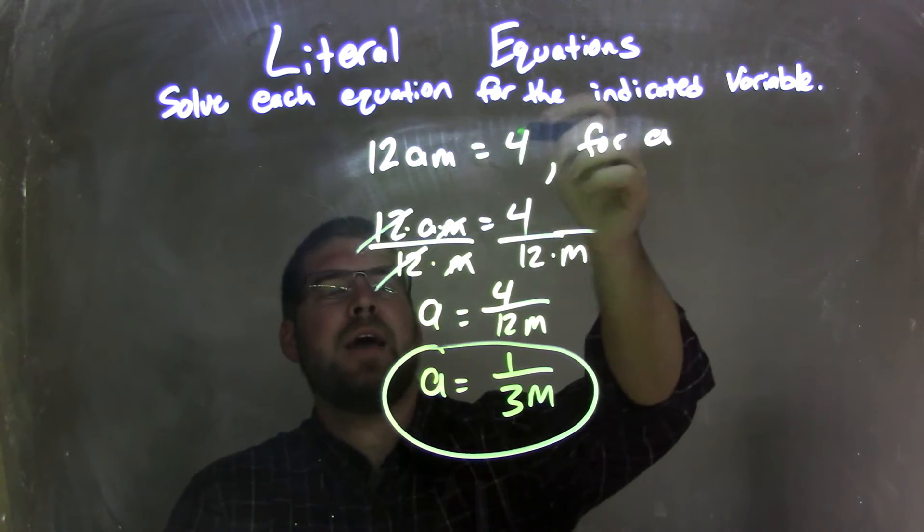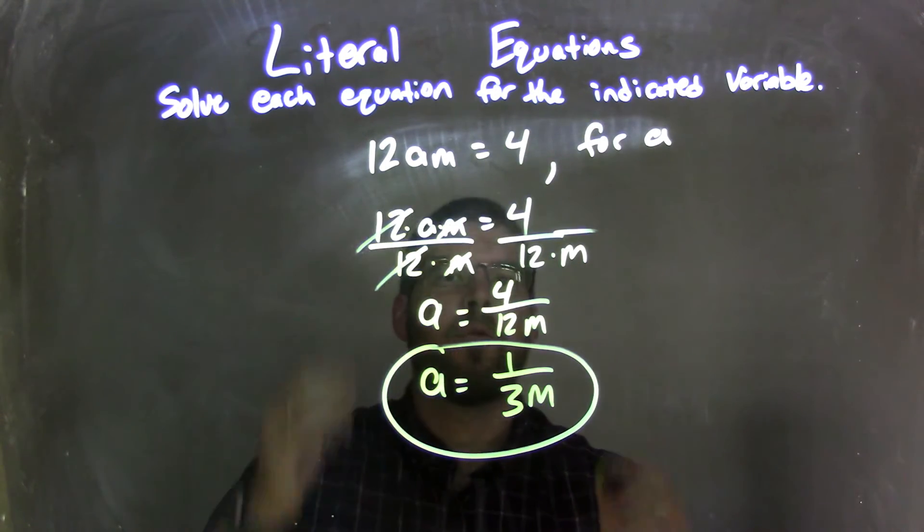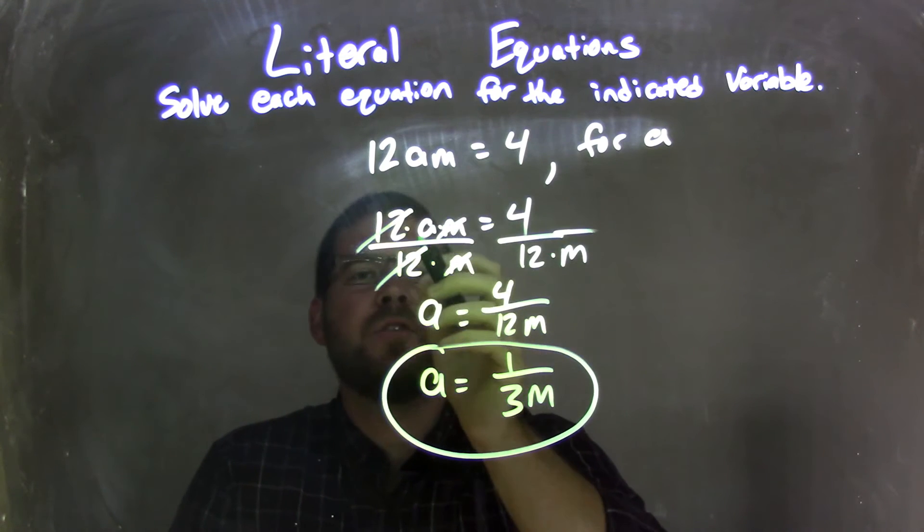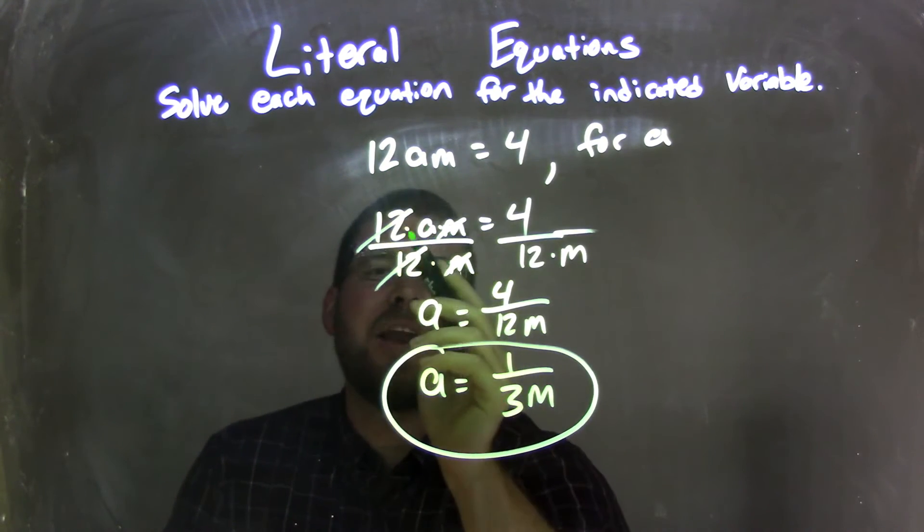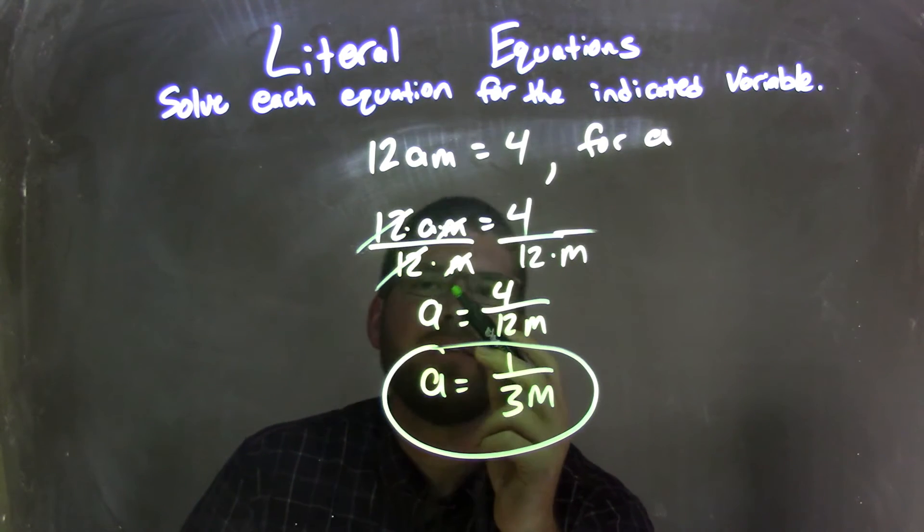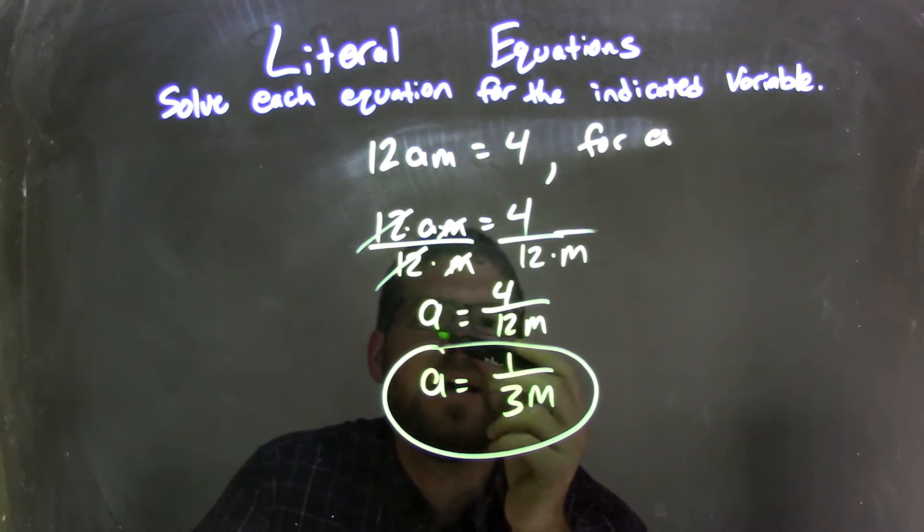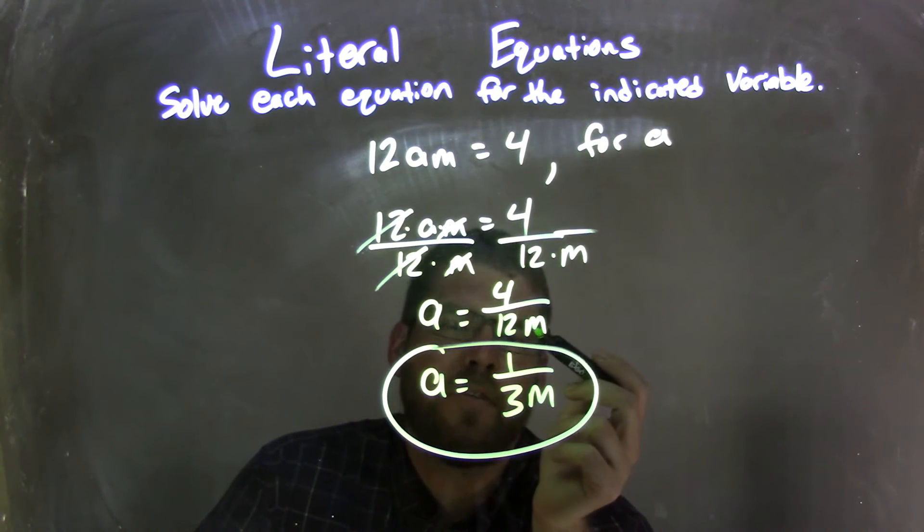So let's recap. We're given 12am equals 4, and we're solving that for A. I rewrote my equation, and then I noticed there's multiplication between the 12 and the A, and the A and the M. I divided both sides by 12m to eliminate the 12 and the M from the left, giving me A equals 4 over 12m on the right.